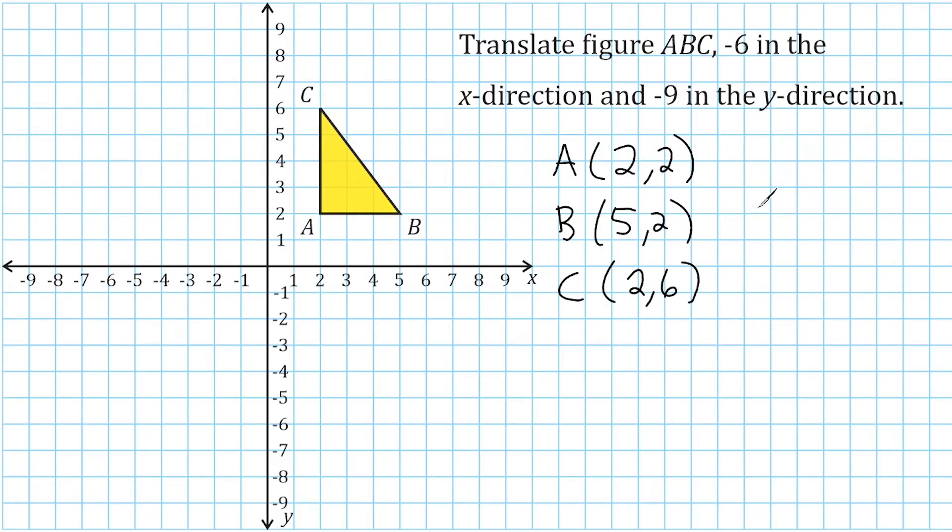All right, now what I like to do to determine where the new locations of points A, B, and C will be is I like to take a look at the movement of the x direction and the y direction and take those numbers and add or subtract them directly to the original coordinates. For example, all of these numbers here are the x values of our points and the second numbers in the parentheses are the y values. Now, the problem is saying that we have to move negative 6 in the x direction. So all we have to do is subtract 6 from our x values.